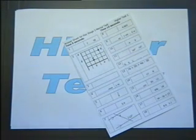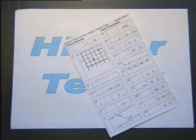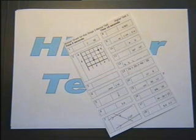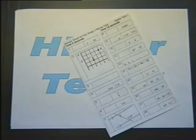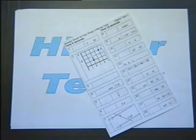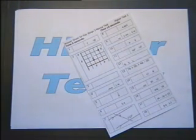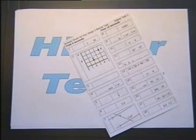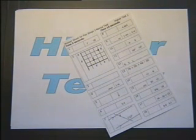Number 6. What is 5.4 multiplied by 100? Number 7. The lines marked with arrows on the answer sheet are parallel. What is the size of the angle marked X?